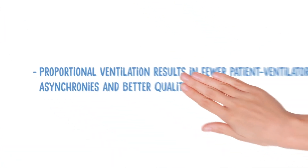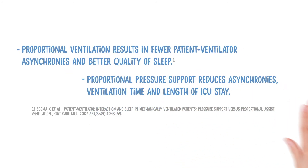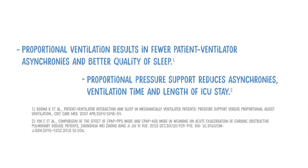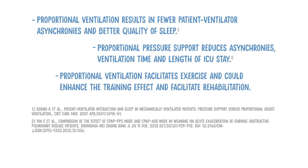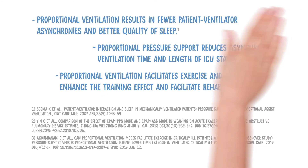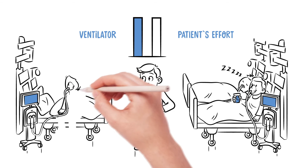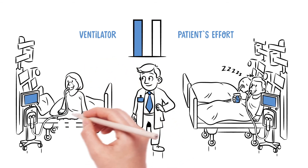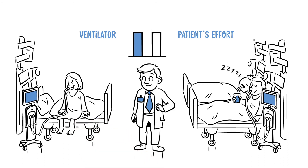Proportional ventilation results in fewer patient-ventilator asynchronies and better quality of sleep. Proportional pressure support reduces asynchronies, ventilation time, and length of ICU stay. Proportional ventilation facilitates exercise and could enhance the training effect and facilitate rehabilitation. The identification, prevention, and resolution of patient-ventilator asynchrony is increasingly being recognised as integral to the optimisation of quality of care for mechanically ventilated patients.